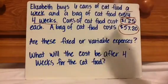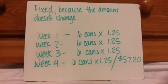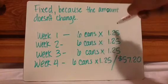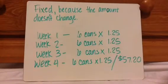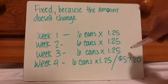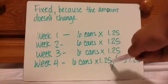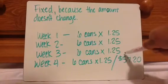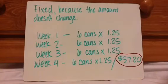What will the cost be after four weeks for the cat food? Here is the plan I've come up with. Week one, she's going to buy six cans, and each can is $1.25, so I would do six times $1.25. Week two would be the same, week three would be the same. But then week four, I have to buy the cans of cat food, but also the bag of cat food, which will last me four weeks.